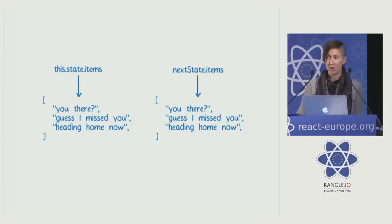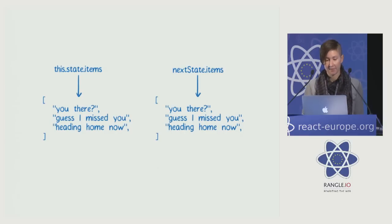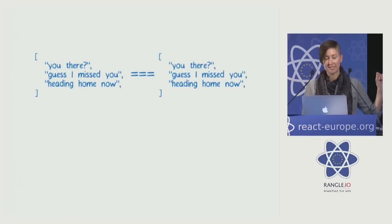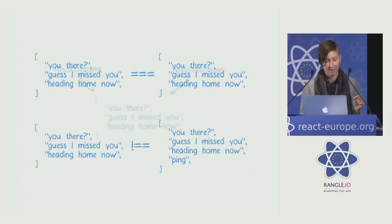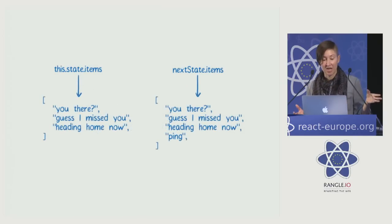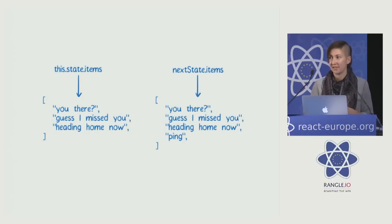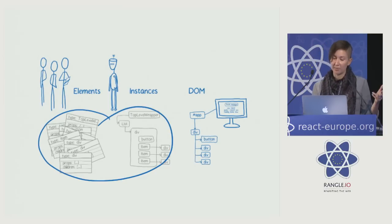It would be nice to have a simple quick equals check but still catch changes to the data. This is what immutability gives you. With immutable data, if two variables are pointing to the same object, you know that data hasn't changed. If it does need to change, you create a new object. So if you're using immutable data, you can do quick equality checks in your shouldComponentUpdate and keep that fast. With shouldComponentUpdate using immutable data, you can short circuit work lower in the tree.